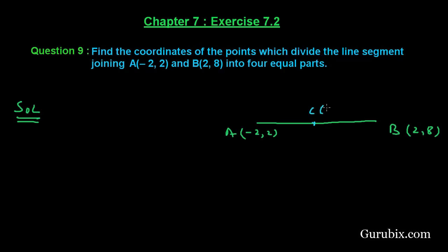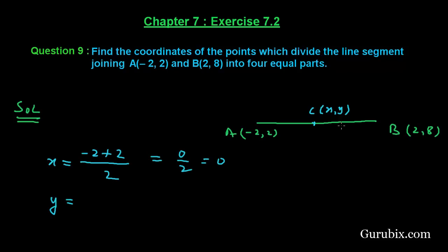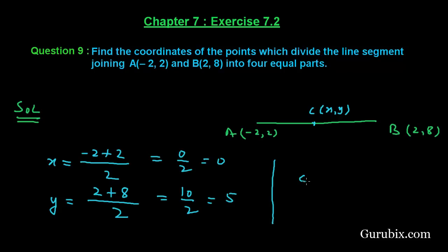The coordinates of C are (x, y). The x-coordinate of point C equals (x1 + x2) / 2, which is (-2 + 2) / 2 = 0 / 2 = 0. The y-coordinate of point C is (y1 + y2) / 2 = (2 + 8) / 2 = 10 / 2 = 5. Therefore, the coordinates of C are (0, 5).